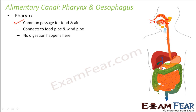Pharynx will take a decision — if it is food, it will send it to the food pipe; if it is air, it will send it to the wind pipe. But no digestion happens in pharynx. Pharynx is just like an entry gate where a person checks your tickets and allows you to go inside. Similarly, pharynx just passes food into the food pipe and air into the wind pipe. That is the only purpose of pharynx — no digestion happens here.